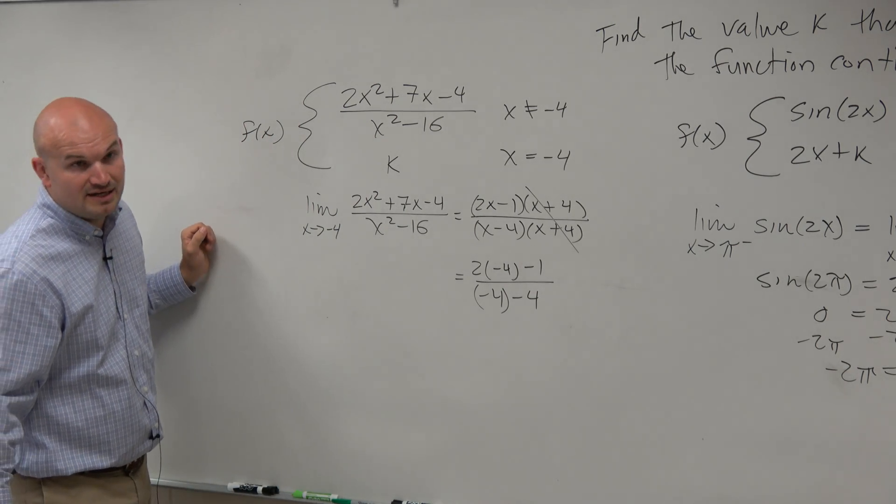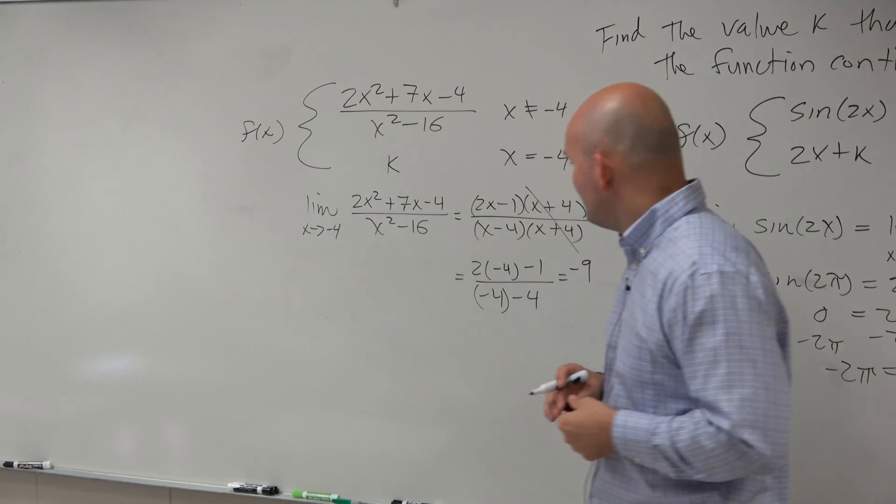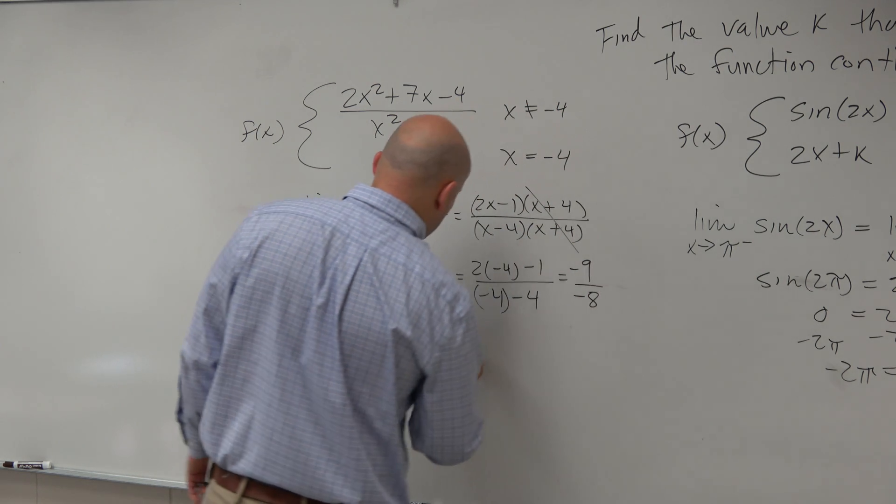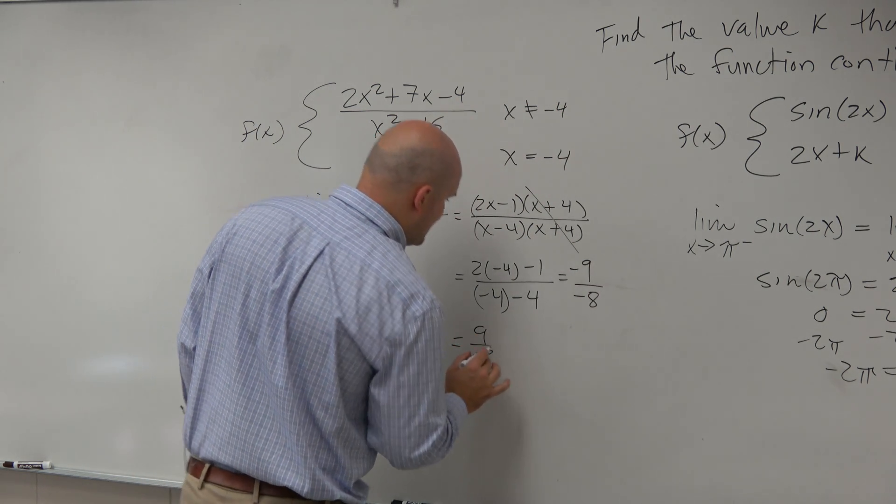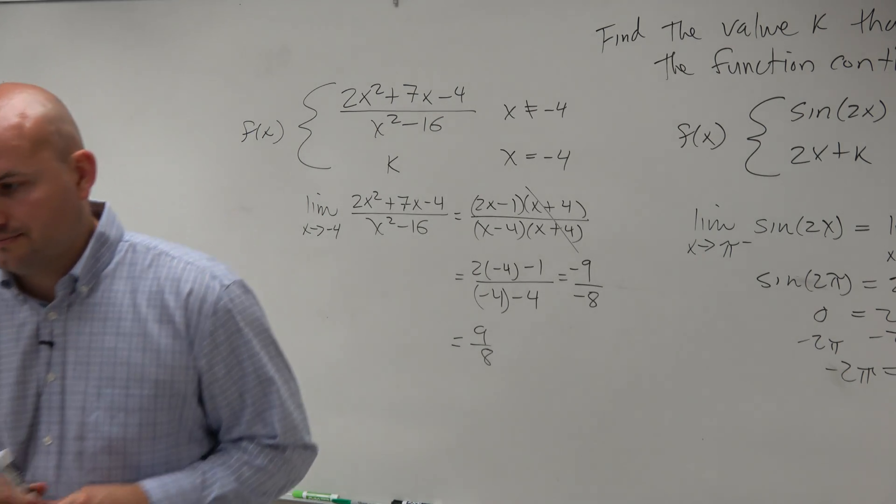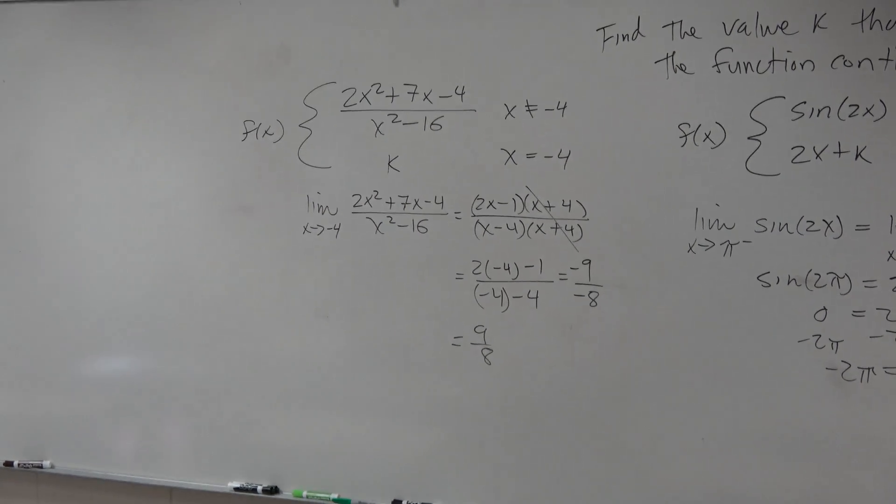2 times negative 4 is negative 8. Negative 8 minus 1 is going to be negative 9. Negative 4 minus 4, so you owe me $4, you borrow another $4, is going to be negative 8. Therefore, my final answer is 9 eighths. Thank you very much.